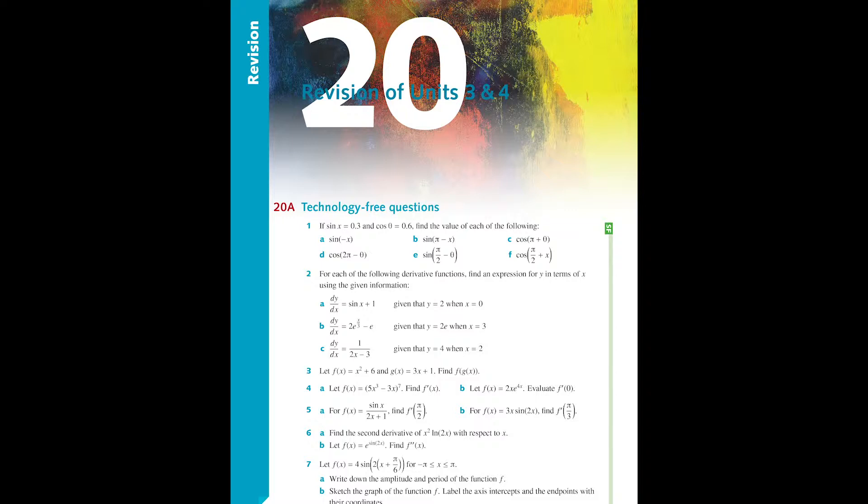The same thing happens at the end of Unit 4. At the end of the book there is a revision chapter for the whole of the course, enabling the student to begin their revision for the final external examination. The student can also use each of the review sections of the chapters and the summaries to help in their preparation for the examination.